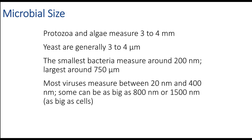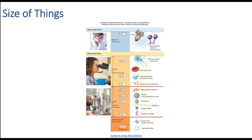Various sizes we need to be concerned about are usually in millimeters or micrometers. Protozoa and algae are pretty large as far as micro is concerned. The smallest bacteria measure around 200 nanometers, and the largest around 750 micrometers. Most viruses measure between 20 and 400 nanometers, though some can be as large as 800 to 1500 nanometers. We still need a scope other than a light microscope to see those. The useful range is roughly 1 micron to 200 nanometers for light microscopy, then we get into electron microscope range.